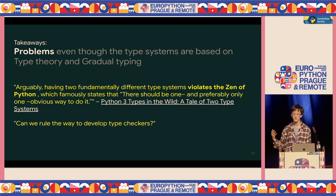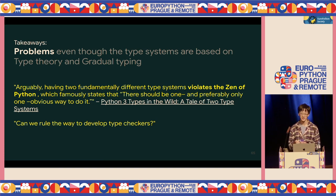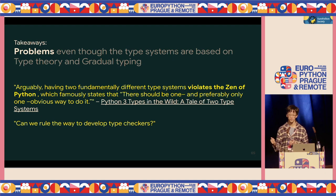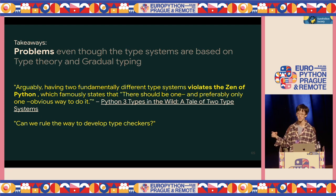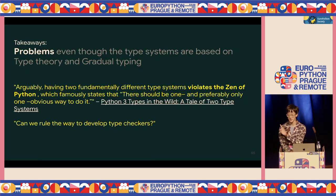The paper argues: having two fundamentally different type systems violates the Zen of Python, which famously says there should be one and preferably only one obvious way to do a thing. So the takeaway is: can we find a way to develop Python type checkers so all type checkers resolve types equivalently?